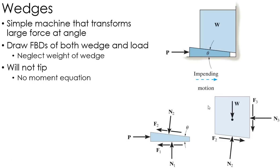Now, generally, the wedge is not going to tip. So we're not going to really have a moment equation when looking at the wedge. And there's really no way for the wedge to tip. So basically, we only have two equations for each one of these. I have the sum of the forces in the X and Y for both of these.